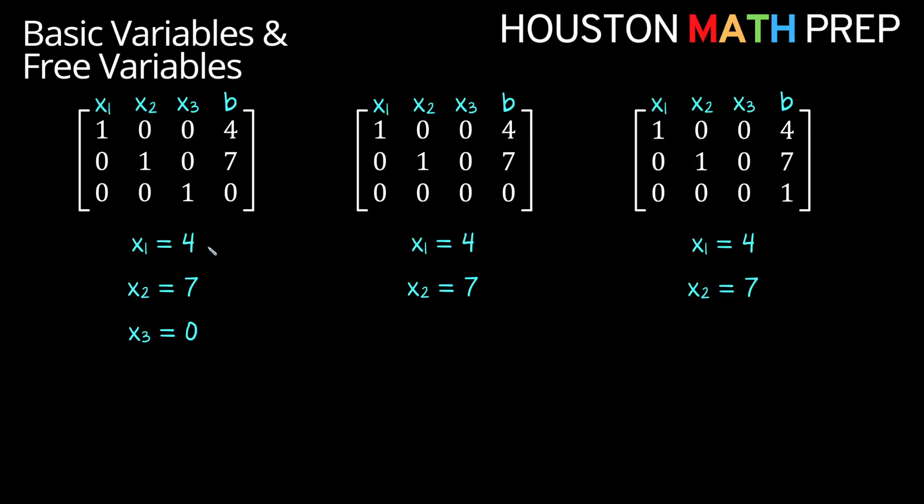So we have x1 is 4, x2 is 7, and x3 equals 0. We get specific numerical values for all variables as our solution, and we would call this the unique solution case.